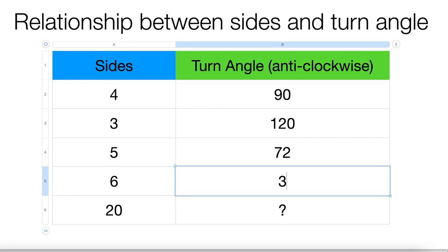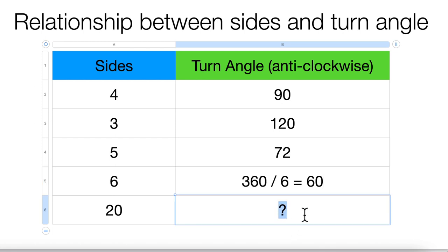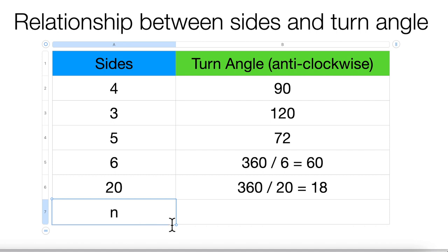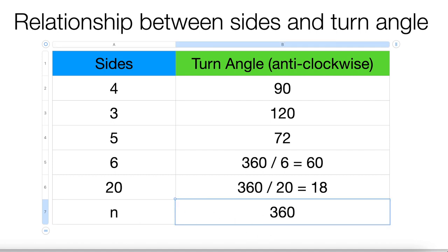Let's say this one is 360 divided by 6, that's 60. And if we have a 20-gon, the turn angle will be 18. So if we have an n-gon, then the turn angle will be 360 divided by n.